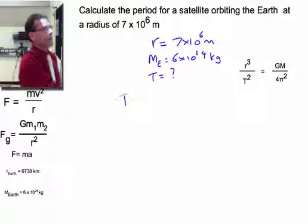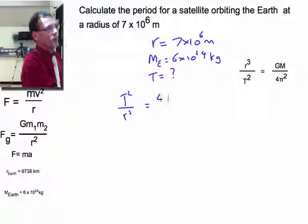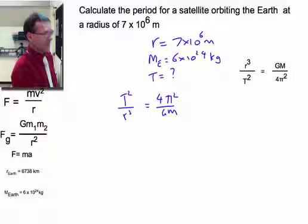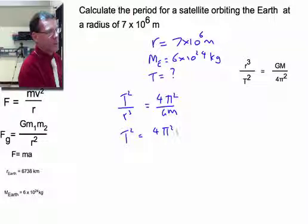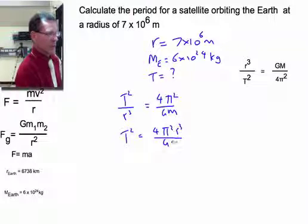So I'm just going to invert that to start with, just because it makes it easier. T squared on R cubed is 4 pi squared on big G, big M. I'm going to multiply both sides by R cubed. Give myself T squared is 4 pi squared R cubed on big G, big M.